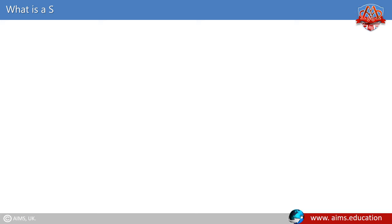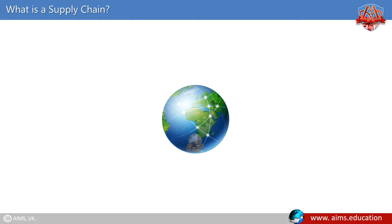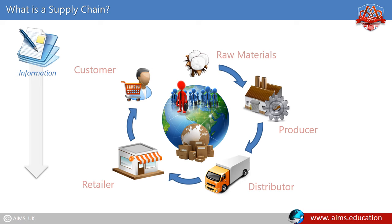What is a supply chain? A supply chain is a global network used to deliver products and services, from raw materials to end customers, through an engineered flow of information, physical distribution and cash.